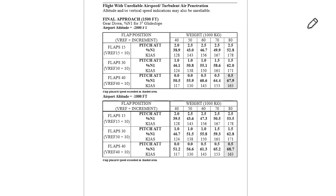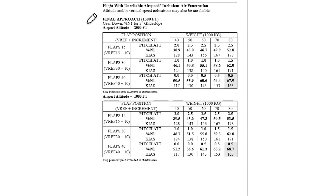For the final approach, we also have different tables depending on the airport altitude. Same thing, it goes from minus 2,000 to 14,500 feet. This assumes a final approach of 1,500 feet, gear down, percent N1 for a three-degree glide slope.